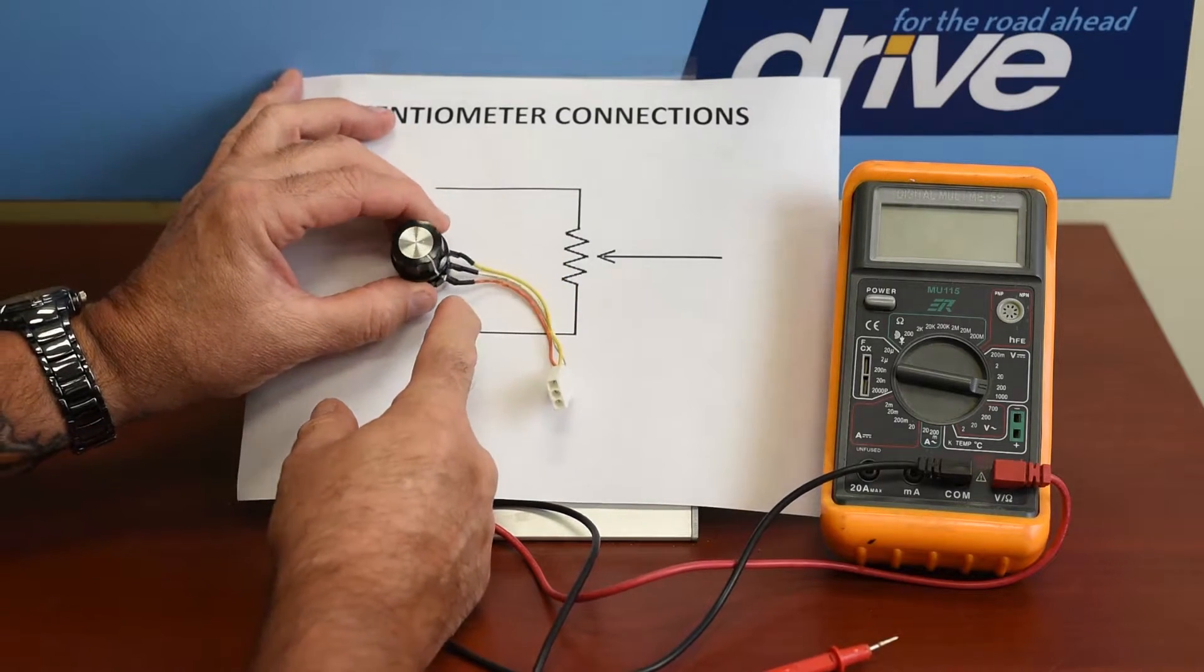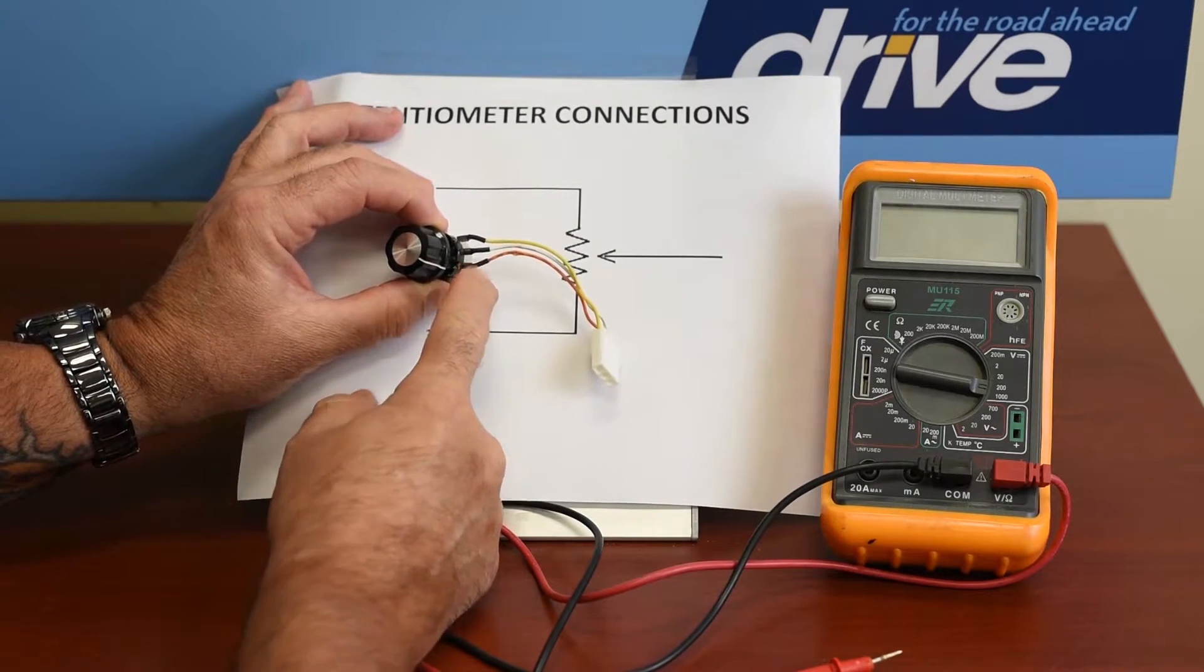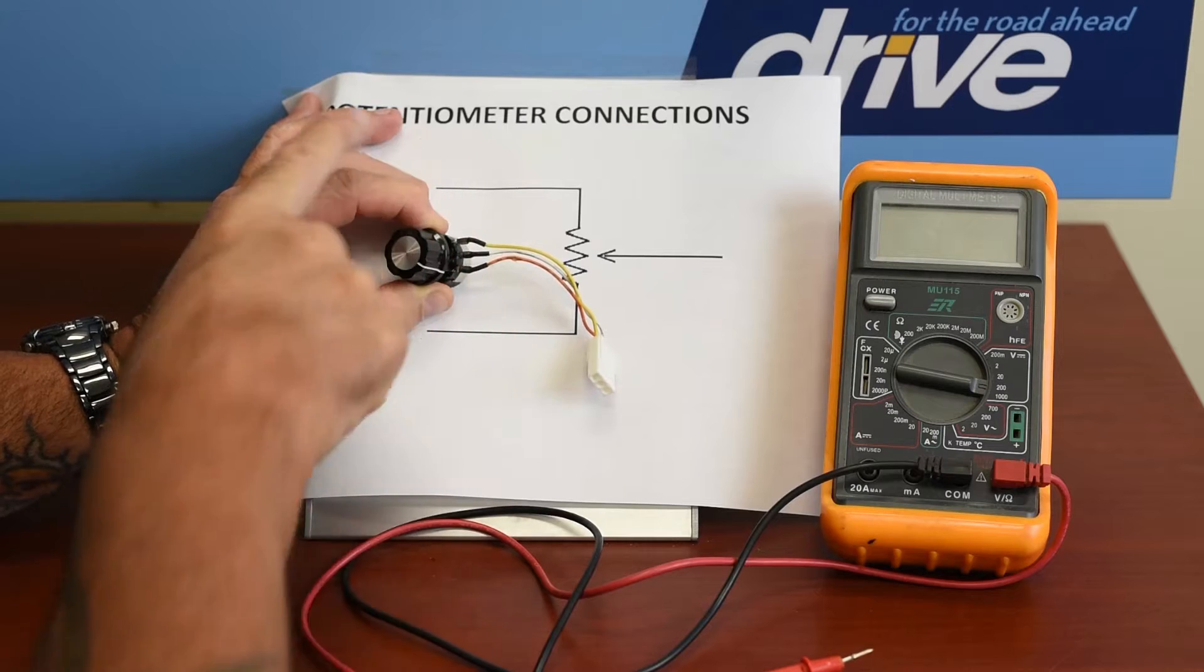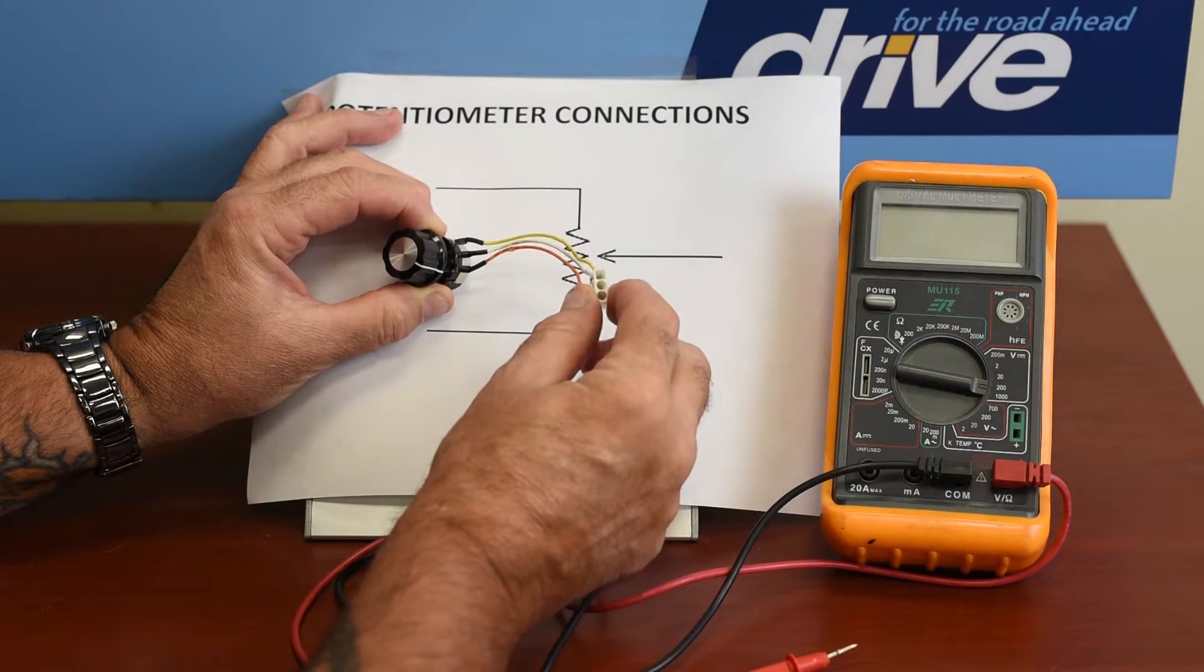Here you see it on the actual speed pot itself, the end terminal, the other end terminal, and the wiper, and they come out to this connector.